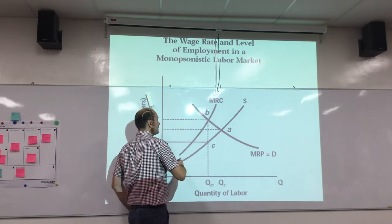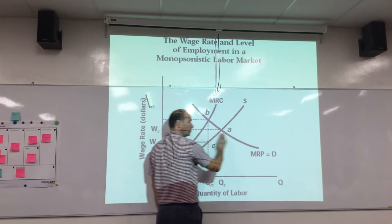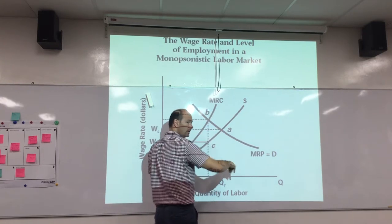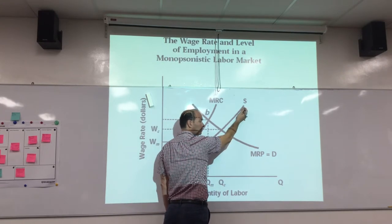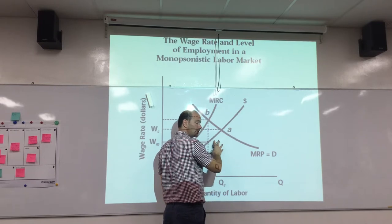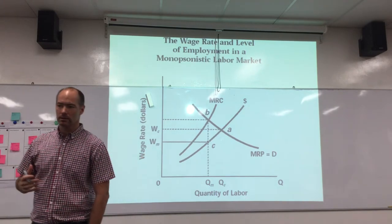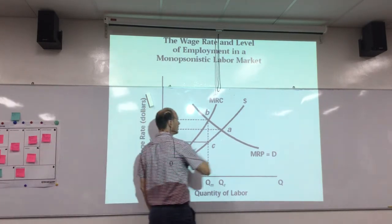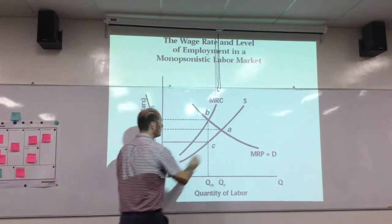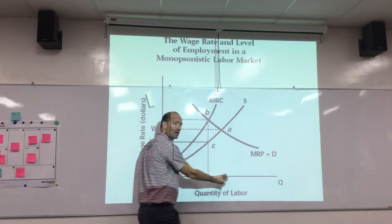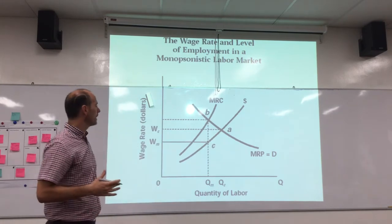So what does that look like? In a perfectly competitive situation, you've got a horizontal supply curve for the firm. But in monopsony, you have an upward sloping supply curve, because the firm essentially is the market — so the supply curve for the firm is the market supply curve. Being upward sloping means that as the firm hires more workers, it has to pay them more and more.